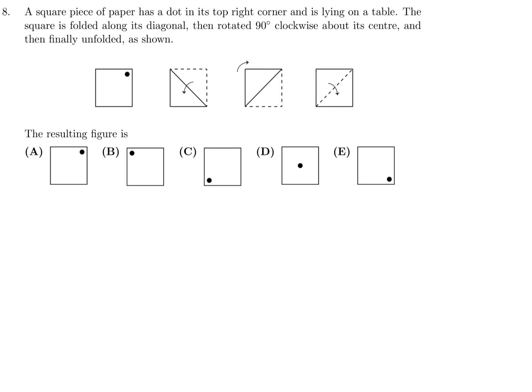A square piece of paper has a dot in its top right corner and is lying on a table. The square is folded along its diagonal, then rotated 90 degrees clockwise about its center, and then finally unfolded as shown. The resulting figure is: My advice, if you're practicing, take out a piece of paper, make it into a square, draw a little dot there, fold it, rotate it, and then unfold it and see what you get. And when you do that, you will hopefully get the right answer, which for number 8 is E.